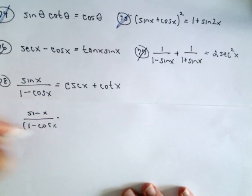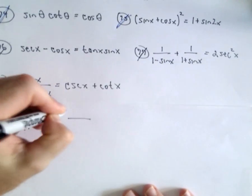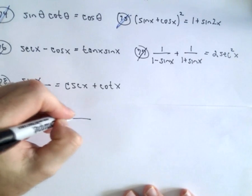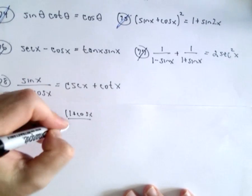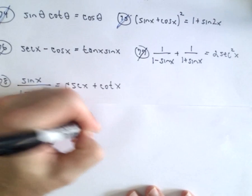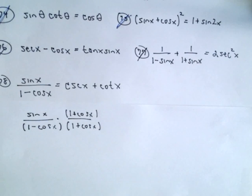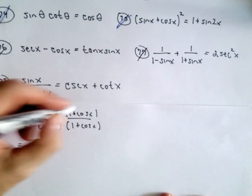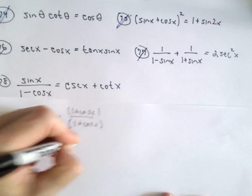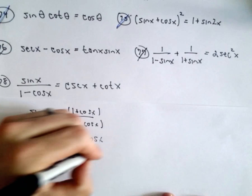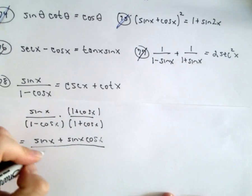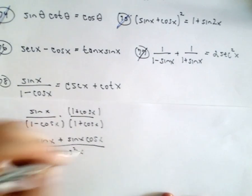So I'm going to multiply top and bottom of this fraction on the left by 1 + cos(x). And the reason I'm doing that is I see that I'm going to get this 1 - cos² and I'm going to be able to use the identity. I'm going to be able to replace that with sin² just like I did a second ago. Okay, so in the numerator we'll have sin(x) if we distribute plus sin(x) times cos(x). And the denominator will get 1 - cos²(x).